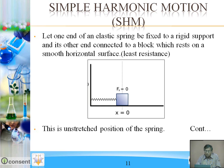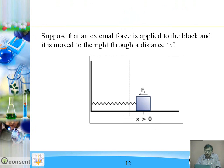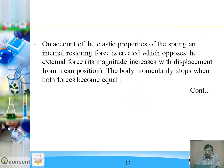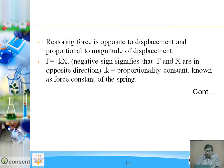The total energy applied is utilized for the displacement of the block. This is the initial unstretched position of the spring. Suppose an external force is applied to the block and it is moved to the right to a distance. The spring is elastic — the main property of elasticity is that when we stretch the spring, a restoring force occurs which tries to restore its original position. An internal restoring force is created which opposes the external force, and its magnitude increases with displacement from mean position. The body momentarily stops when both forces become equal.